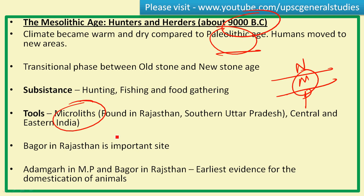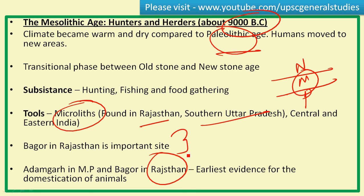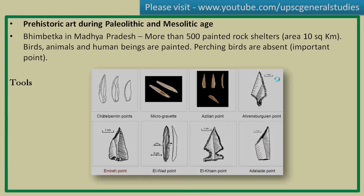The Mesolithic Age started around 9000 BC. Tools used are microliths — micro means small, lith means stone. These are much more refined compared to Paleolithic stone tools. Sites are found in Rajasthan, southern UP, and central and eastern India. Adamgarh in Madhya Pradesh and Bagor in Rajasthan provide the earliest evidence for the domestication of animals, even though formal domestication began in the Neolithic age.